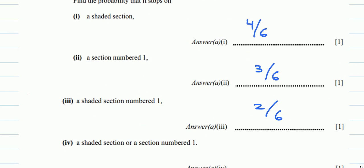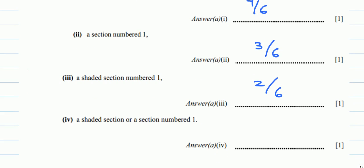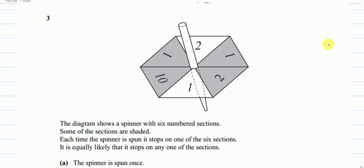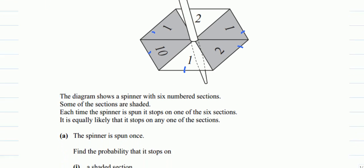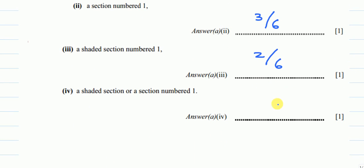Let's see part four: a shaded section or a section numbered one. Shaded sections we have four, and then they said 'or a number one.' The number ones here are already included. So I have to include just one more, making the total chances five out of the six.